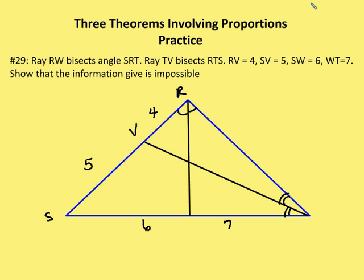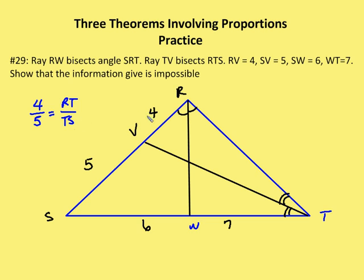Problem number 29: Ray RW bisects angle SRT, and TV bisects angle RTS. We're given RV equals 4, SV equals 5, SW equals 6, and WT equals 7, and we need to show that this information is impossible. We have two triangles where we can apply the angle bisector theorem. By the angle bisector theorem on the first triangle, 4 is to 5 as RT is to TS, and TS equals 7 plus 6 equals 13.